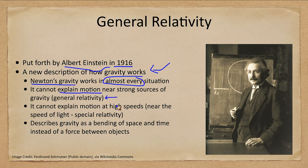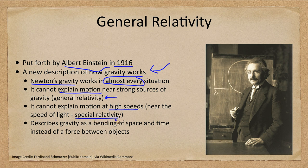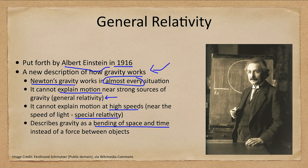It also cannot explain motion at high speeds, those near the speed of light. That is what is called special relativity, and I will look at that in a future lecture. What it does is instead of describing gravity as a force between two objects, gravity is a bending of space and time. So massive objects will deform space and time, and then objects move in the shortest path they can in that deformed spacetime.